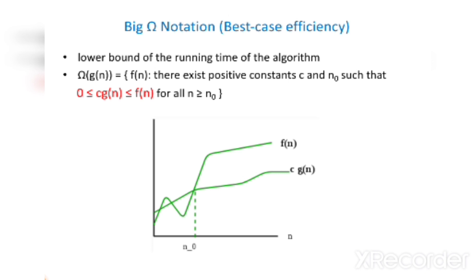Big Omega notation defines the best case efficiency and represents the lower bound of the running time of the algorithm. The formula is: Omega of g(n) = f(n) — there exist positive constants c and n₀ such that 0 ≤ c·g(n) ≤ f(n) for all n greater than or equal to n₀. In the graph, one line represents f(n) and the other represents c·g(n).